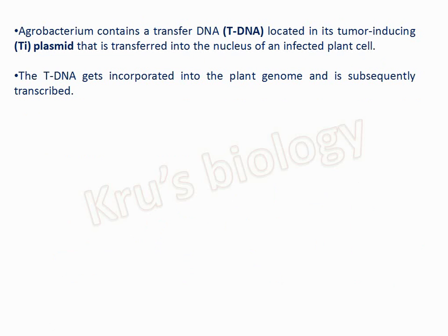Now we will discuss in detail the genes and the mechanism of gene transformation. Agrobacterium contains the Ti plasmid, into which T-DNA is located. That T-DNA is transferred into the plant genome and transcribed and translated.